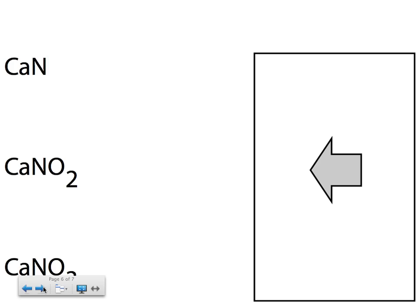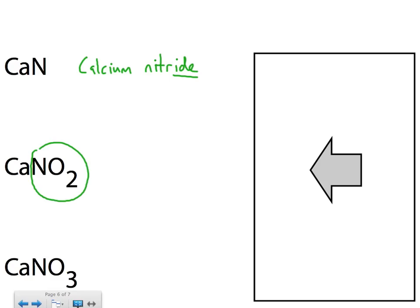So, let's look at some examples here. What would we call these? Okay, so here's the nitrogen by itself. So, we would call this calcium nitride, okay? Now, these two, okay, they both have nitrogen bonded. So, here is the polyatomic ion part of the formula.